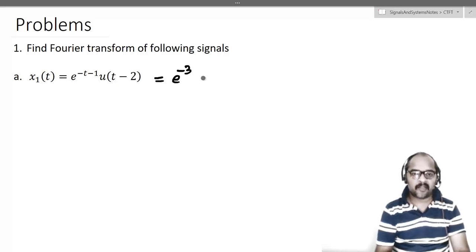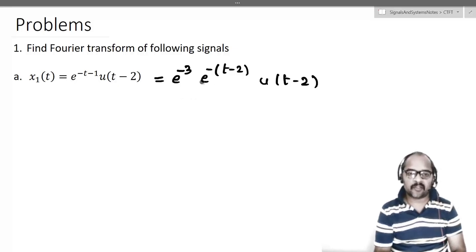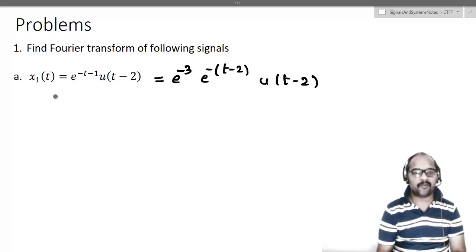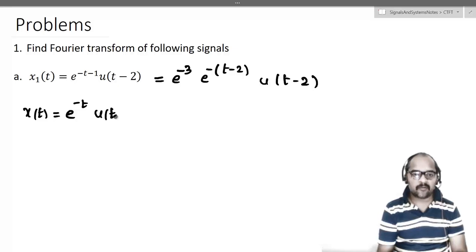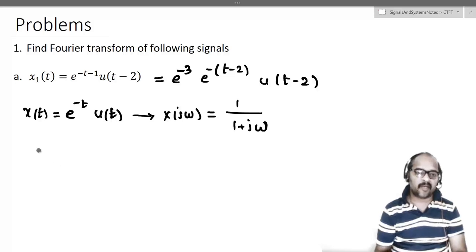Convince yourself this is correct: e^(-(t-2)) multiplied with e^(-3) gives e^(-t+2-3) = e^(-t-1), which matches the original signal. We write it this way because we already know the Fourier transform of x(t) = e^(-t) u(t), which has X(jω) = 1/(1+jω).